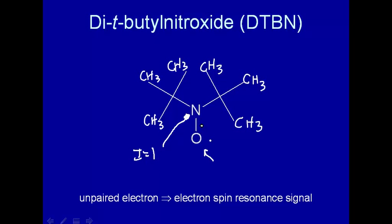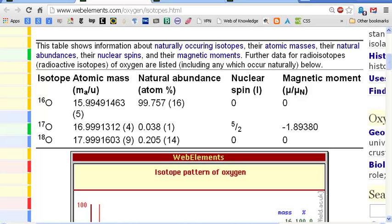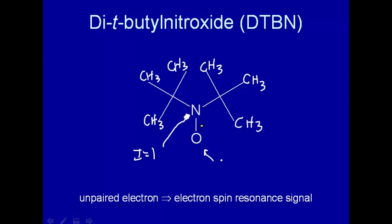How about the oxygen? Well, we'll take a look at the oxygen. Here's oxygen. Oxygen has one, two, three stable isotopes. Over 99 percent is oxygen-16, which has a nuclear spin of zero. If you have a nuclear spin of zero, there'll be no interaction, so I equals zero.